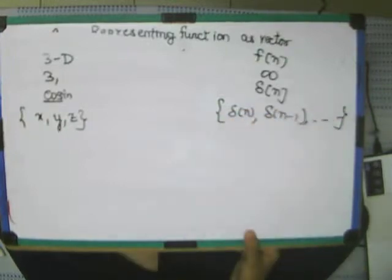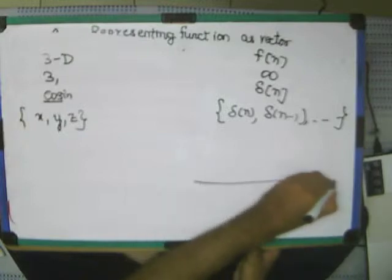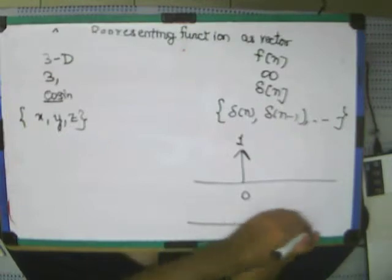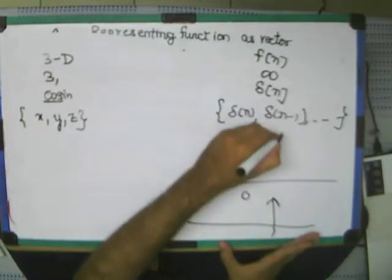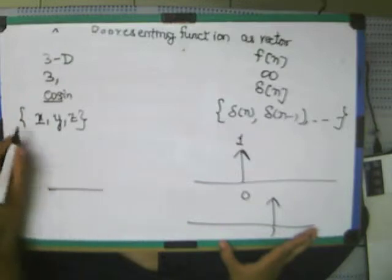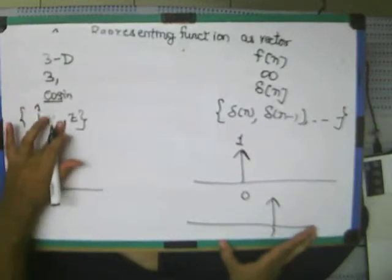Why are they bases? Because what is delta(n)? It is 1 at 0 and 0 everywhere else. Delta(n-1) is 1 at 1. Similarly, these bases are i, j, k as we sometimes call them.